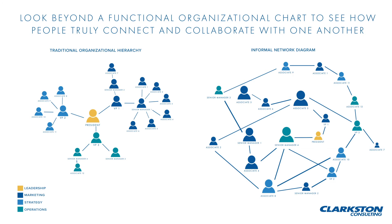For example, Associate 4 is well connected within their team and across departments. In the context of change management, Associate 4 may be an important person to champion a new initiative, as they are valuable for knowledge sharing and influencing others.